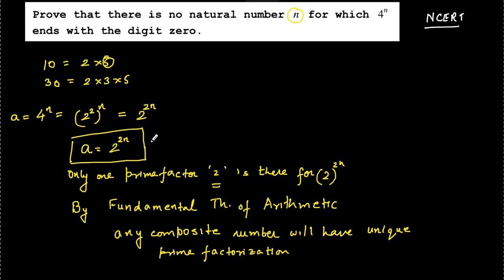So if this number doesn't carry any prime factor as 5, then there is no possibility of having zero at its units place. So that is what the proof would look like, and this is a very good application of fundamental theorem of arithmetic.